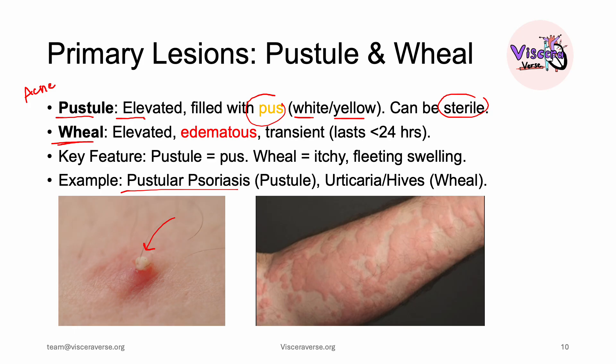A wheal is a hallmark of urticaria. These are elevated, erythematous, and transient — meaning they come and go within a few hours, typically less than 24 hours. If a lesion lasts more than 24 hours, then it is not a wheal and not urticaria.